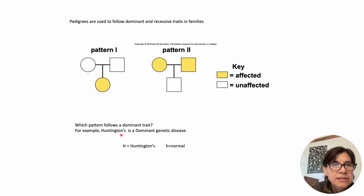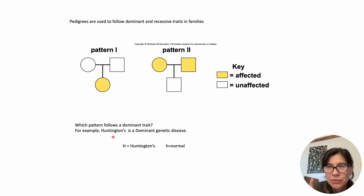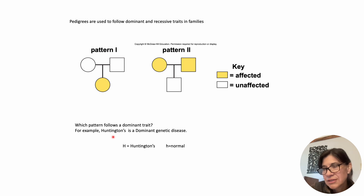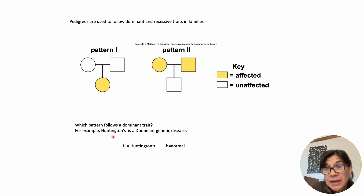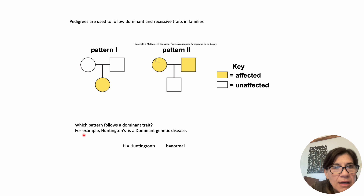Now let's look at a dominant disorder. An example is Huntington's disease, which is a dominant genetic disorder that's lethal. If it's dominant and lethal, how do people pass it on? With Huntington's, it's neurological and doesn't show up until your mid to late 30s, by which point you could have already had a child. For Huntington's, big H is the dominant allele. The darkened individuals have Huntington's, so they have to have at least one big H.